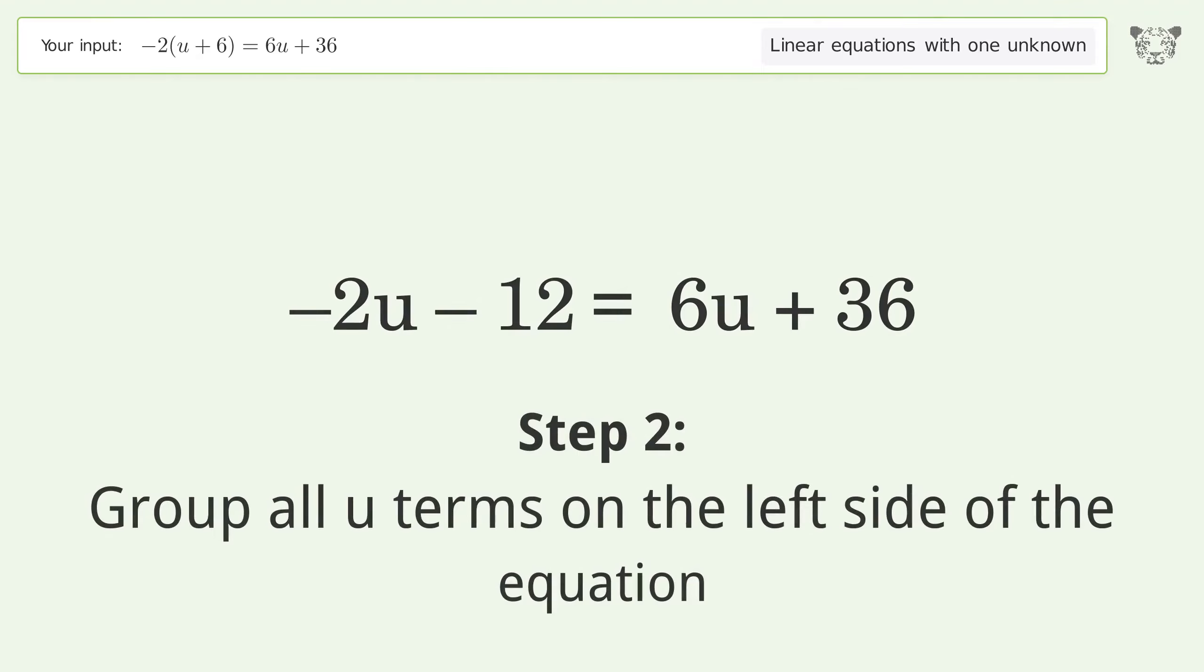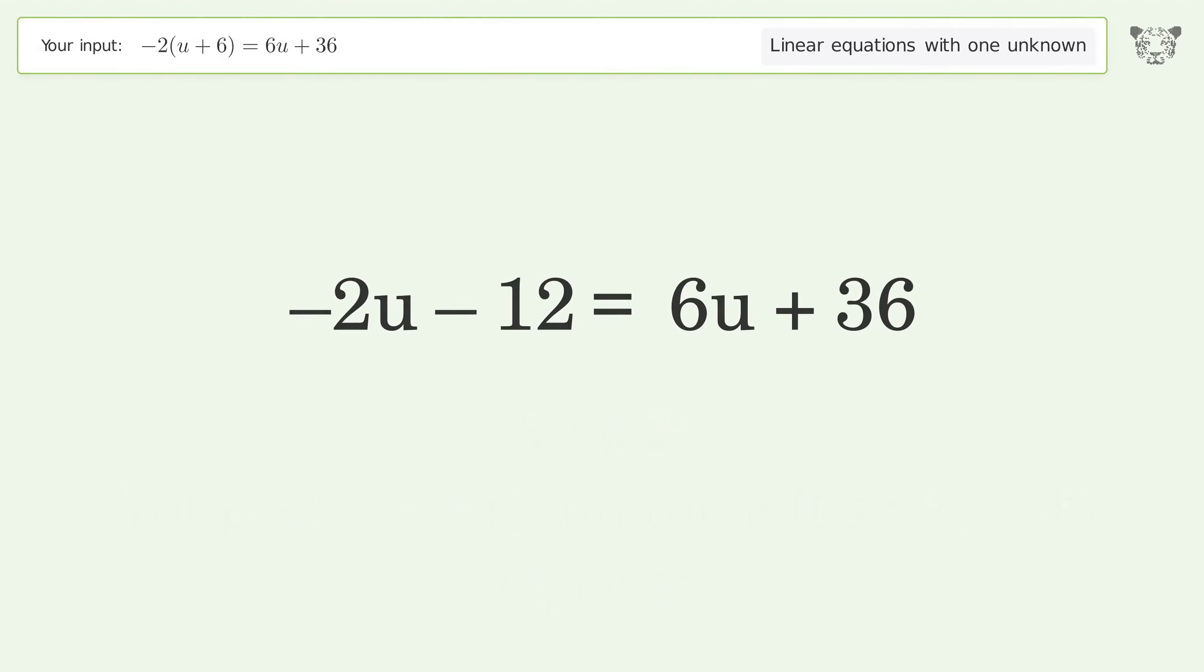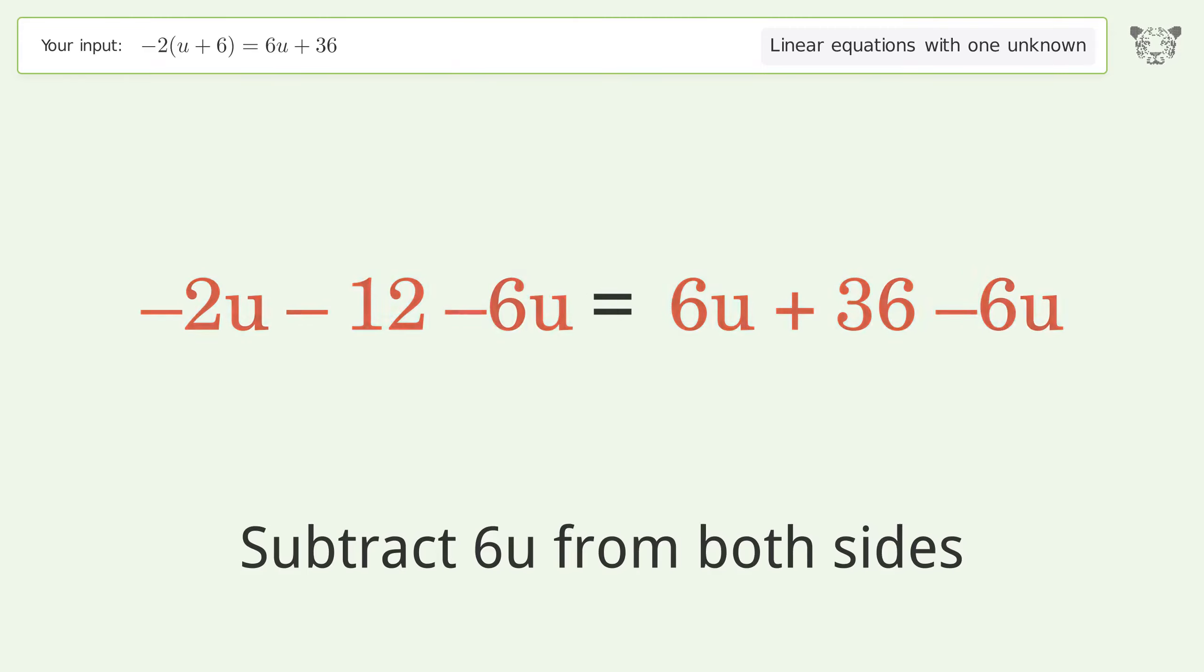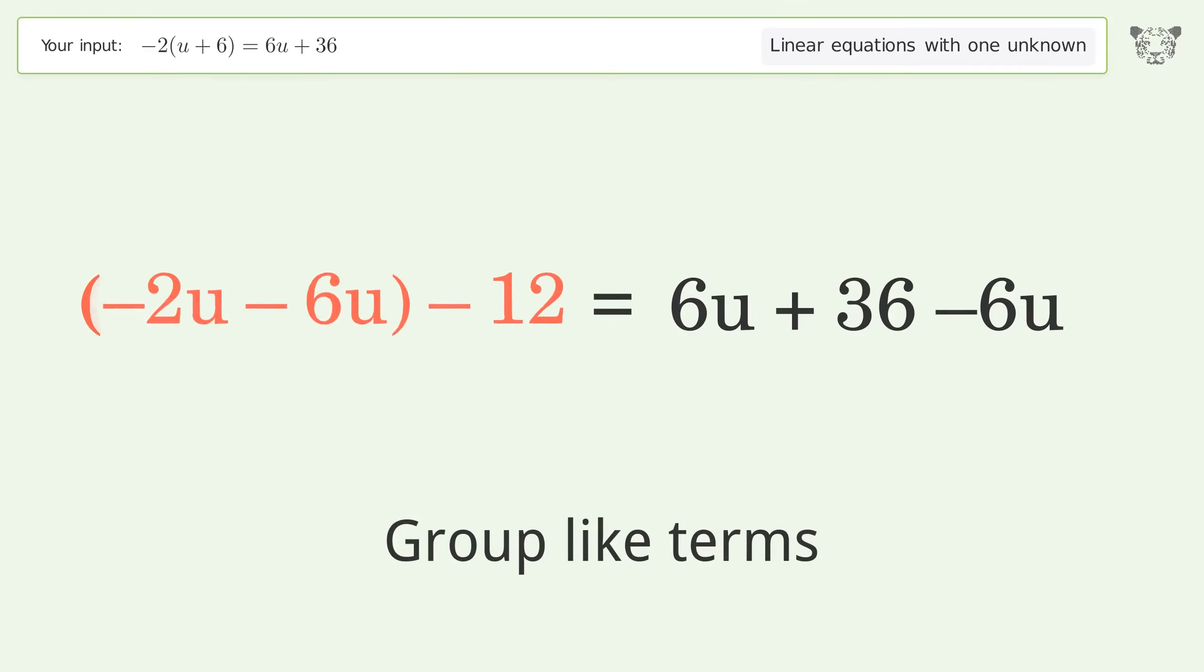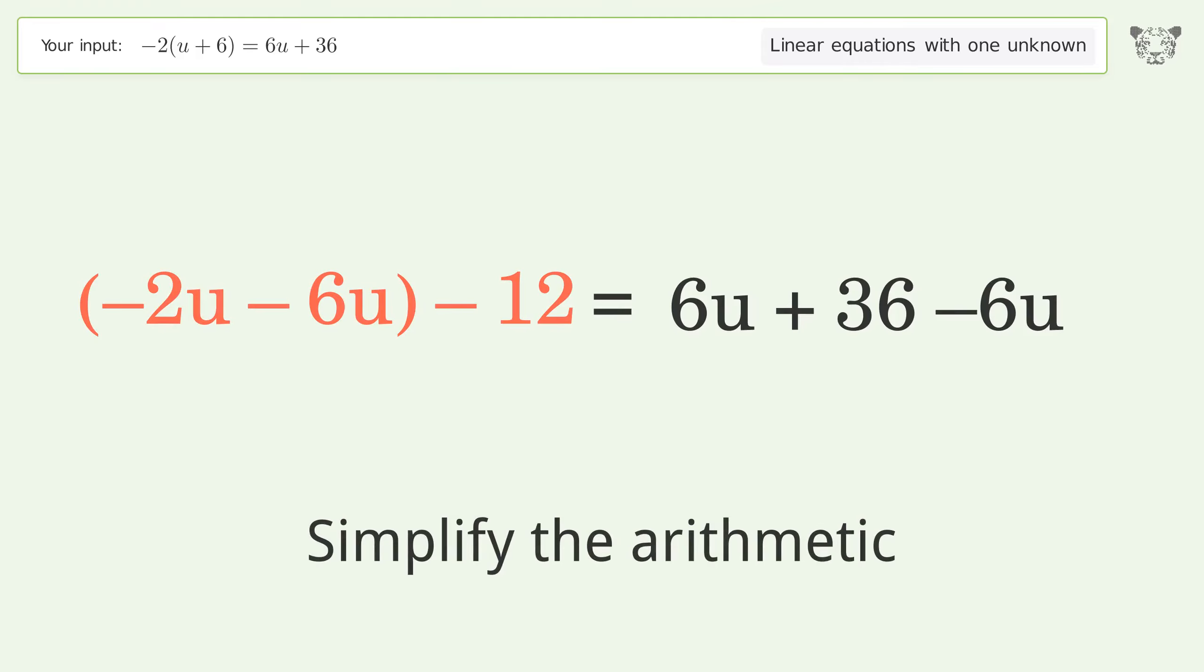Group all u terms on the left side of the equation. Subtract 6u from both sides. Group like terms, simplify the arithmetic.